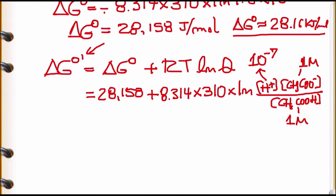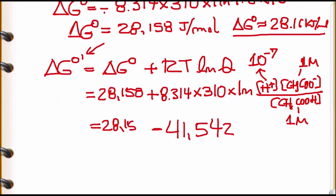So we calculate using ln(10⁻⁷). This logarithm equals −16.1, making the second term 8.314 × 310 × (−16.1) = −41,542 J/mol. The first term remains +28,158 J/mol.